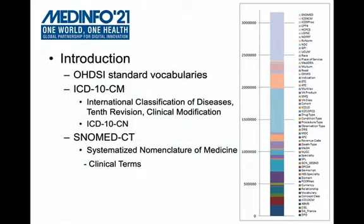A very brief introduction: the OHDSI standard vocabularies are foundational terminology and ontology resources to enable consistent coding and query of clinical data across different observational databases. There are more than 100 vocabularies representing different domains of clinical data and multiple languages working together to harmonize clinical content behind the OHDSI information model. ICD-10CN and SNOMED CT are two of the most commonly used vocabularies for diagnosis and clinical findings.